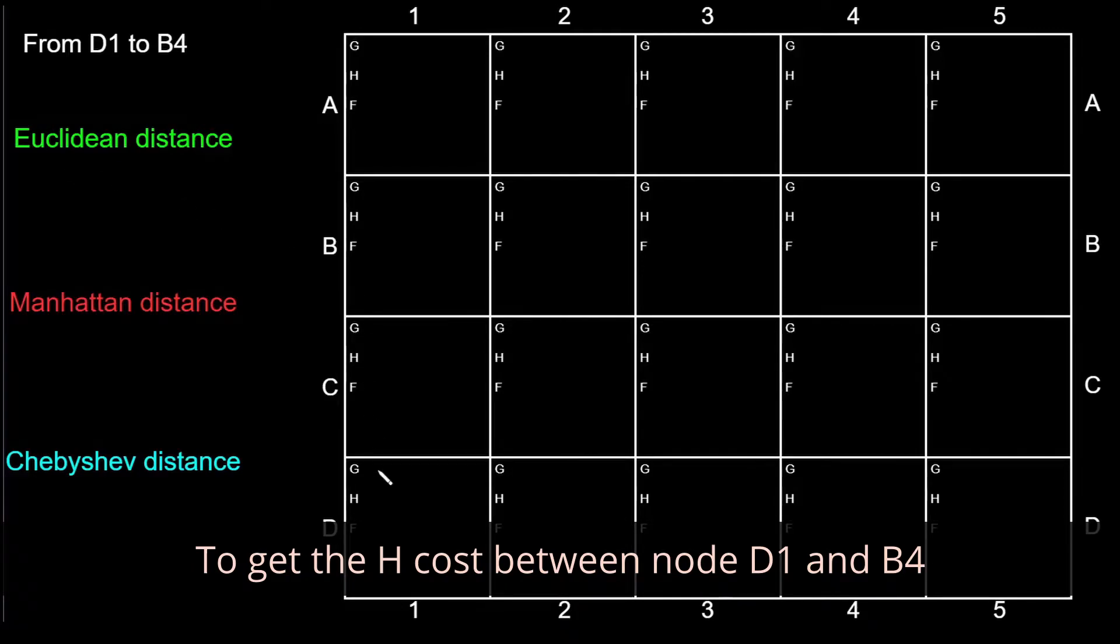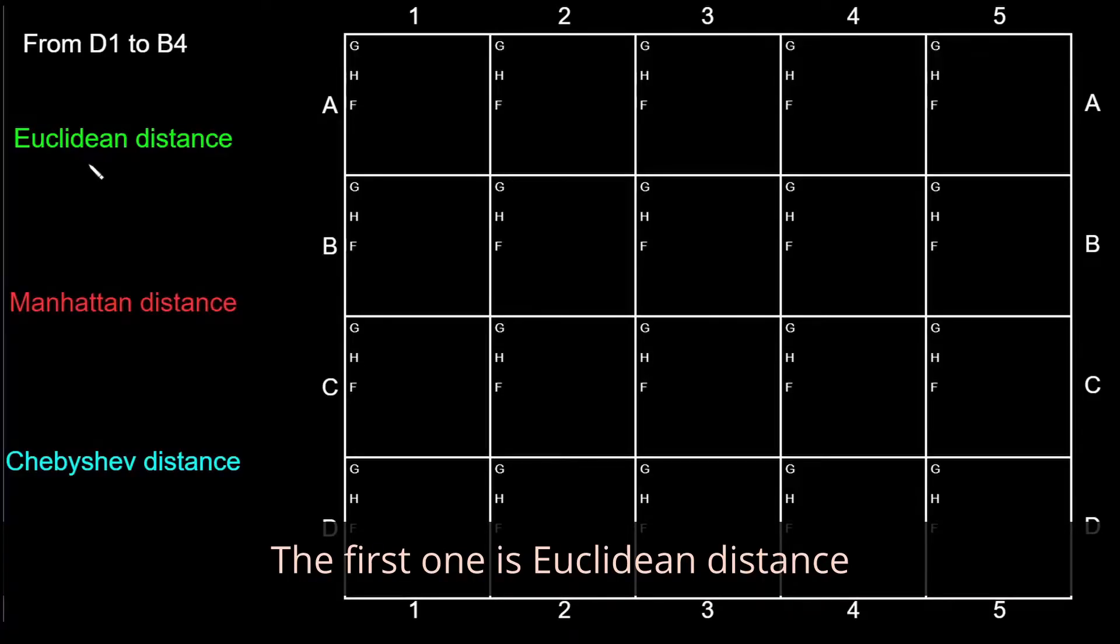To get the h-cost between the node d1 and b4, we have three options. The first one is Euclidean distance.